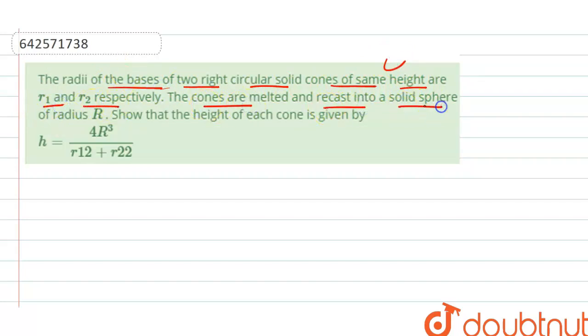The cones are melted and recast into a solid sphere of radius R, so that the height of each cone is given by H equals 4R³ divided by R1² plus R2².